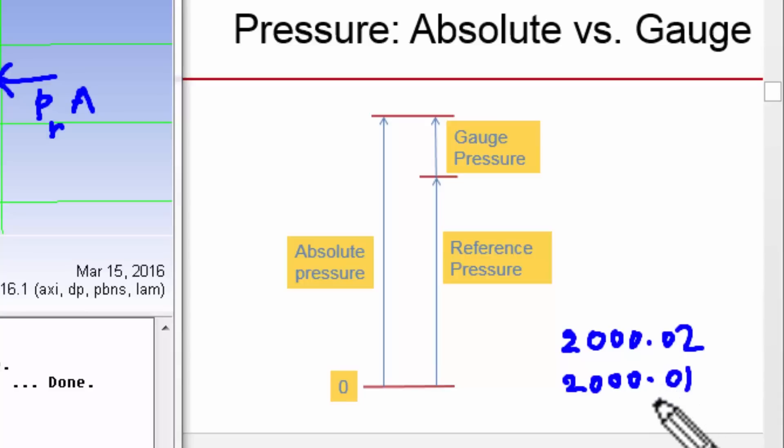So when it takes a difference, if you have a precision of only four digits, this is going to be 2000, this is going to be 2000, it's going to say there's no pressure differential, whereas that small number matters. Whereas if I subtract out 2000, that would be my reference, I'm going to get the difference between 0.02 and 0.01, and that'll fit within the precision of four digits, and I'm going to get the right result.